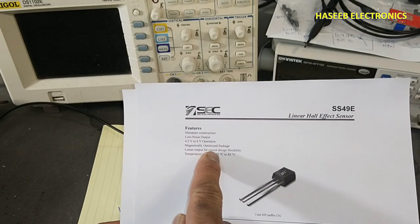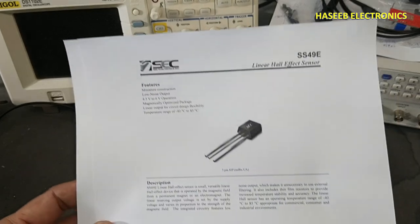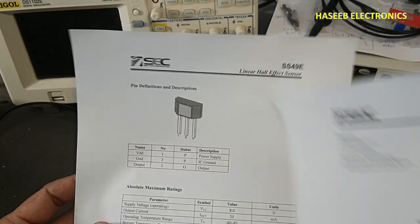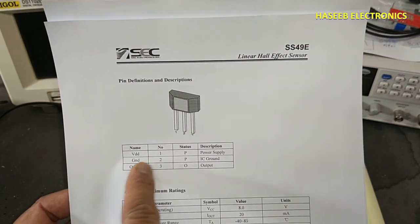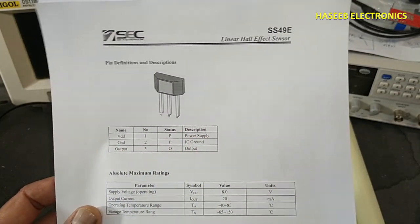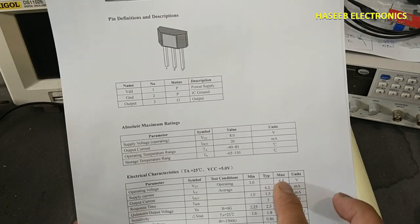Linear output for circuit design flexibility. Different parameters are mentioned here. Pin 1 that is supply pin, pin 2 ground, pin 3 output. Operating voltage 3 volt to 6.5 volt maximum condition, normally 4.5 to 6 volts.